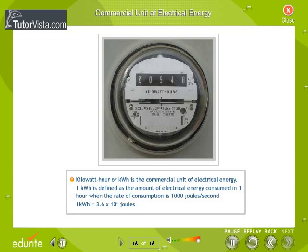Commercial unit of electrical energy: 1 kilowatt-hour is defined as the amount of electrical energy consumed in 1 hour when the rate of consumption is 1000 joules per second. 1 kilowatt-hour equals 3.6 into 10 to the power of 6 joules.